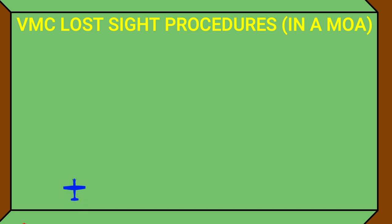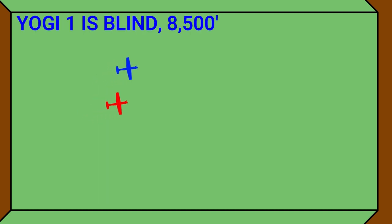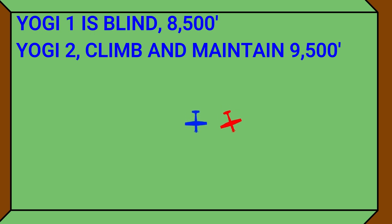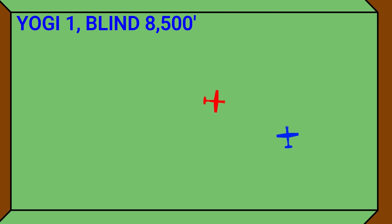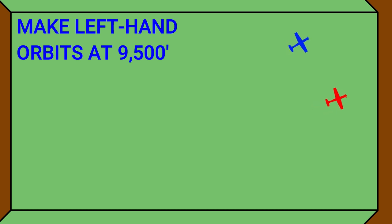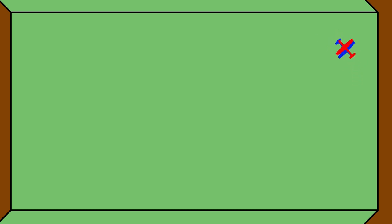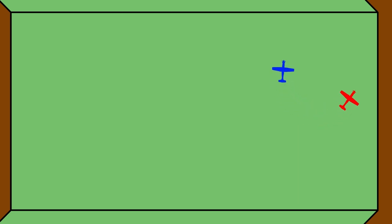Here's an example of blind procedures: 'Yogi 2 is blind, 9,000 feet.' — 'Roger.' — 'Yogi 1 is blind, 8,500 feet.' — 'Yogi 2, climb and maintain 9,500 feet. Report when established.' — '2.' — 'Yogi 2 is blind, 9,500 feet.' — 'Yogi 1, blind, 8,500 feet.' — 'Yogi 2, fly to the northeast corner of the MOA. Make left hand orbits at 9,500 feet.' — '2.' — 'Yogi 1 will make right hand orbits in the northeast corner at 8,500 feet.' — '2.' — 'Yogi 2 is visual.'